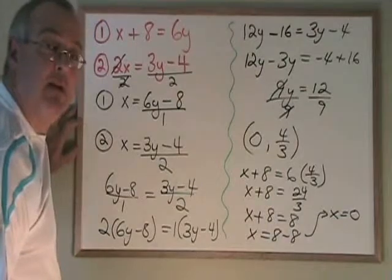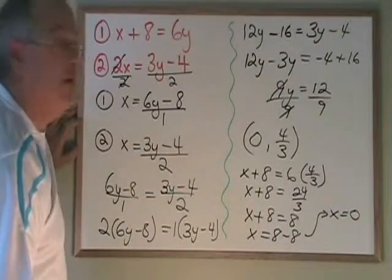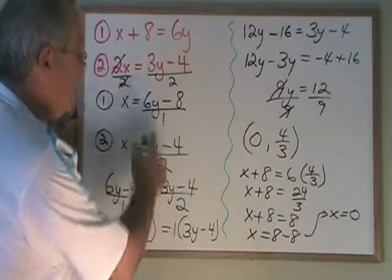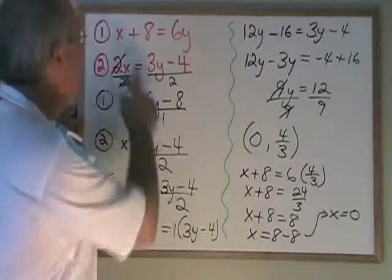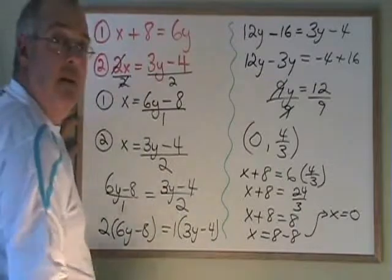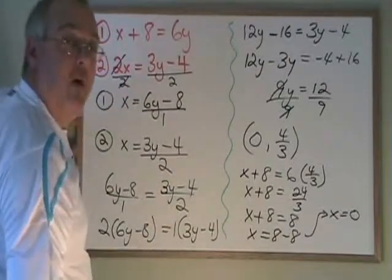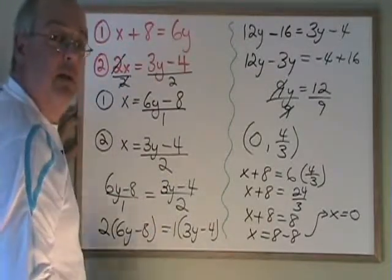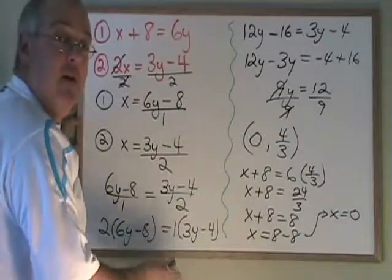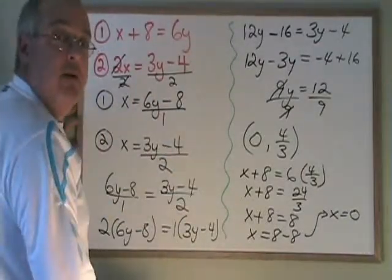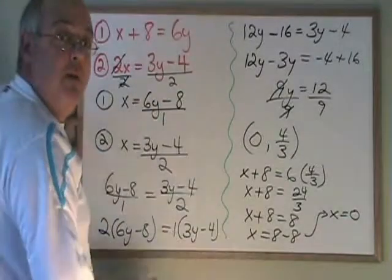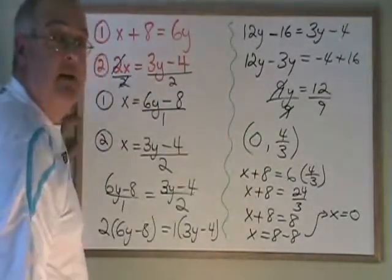This is the same answer we got the first time we tried to do this example. But it went a little easier this time because looking at the original equations, we can see that isolating the x's will be a little faster this time than isolating the y's. And this illustrates the fact that when you use comparison, you always have a choice of isolating the x's in both equations or isolating the y's in both equations. And either way, you will get the same answer.